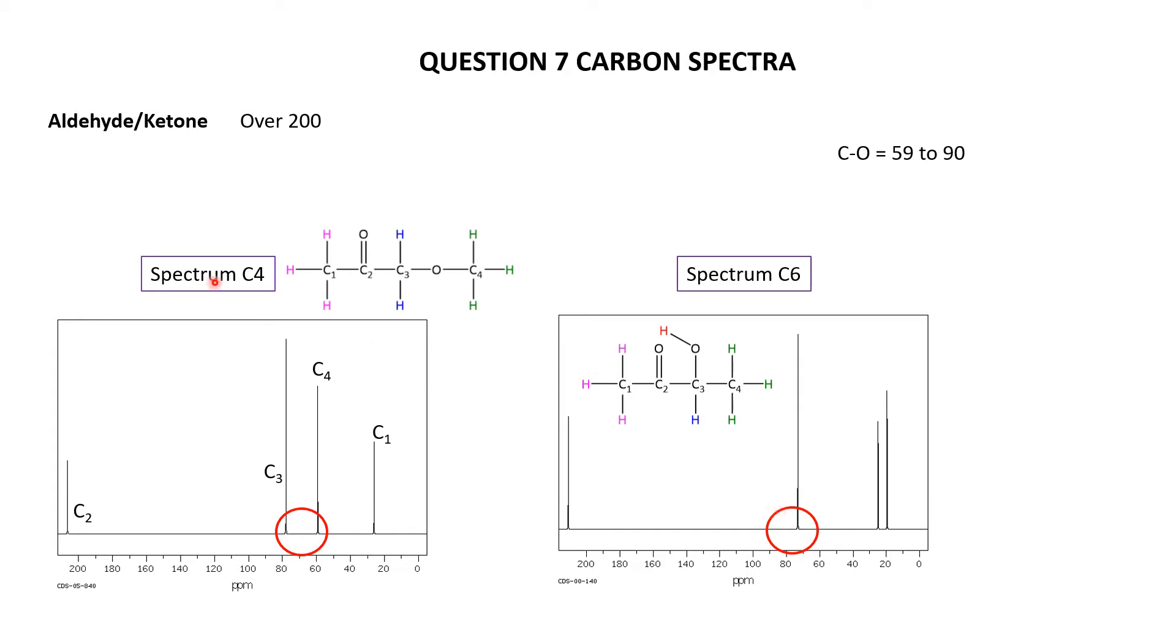So adding in the numbers, C2 here was the ketone. C3 and C4 are the ones bonded to the oxygen. I would put C3 further downfield because it's closer to the ketone group. And then, of course, poor C1, well, down here, close to the ketone group, but it's bonded to a carbon rather than C3 and C4, which both bond to oxygens.